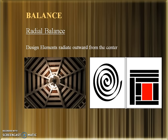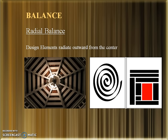The third type of balance is Radial Balance. It is similar to a radius of a circle — the design elements radiate outwards from the center. Radial Balance is also called a Formal Balance because once you divide it from the center, the left and the right sides or the top and the bottom are equal and similar to each other.